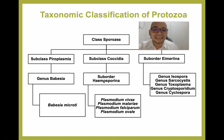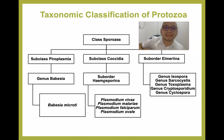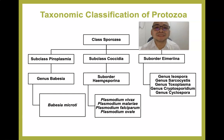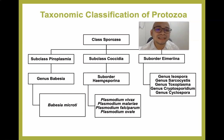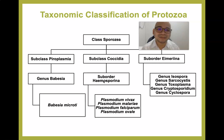The fifth species is Plasmodium knowlesi. Still under Sporozoa, under suborder Eimeriina, we have the genera Isospora, Sarcocystis, Toxoplasma, Cryptosporidium, and Cyclospora. These particular parasites mostly infect people who are immunocompromised.